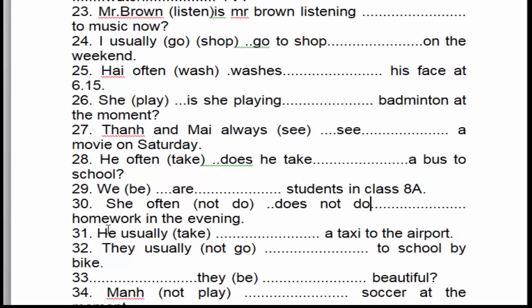Câu số 31: 'He usually takes a taxi to the airport.' Anh ấy thường đón taxi đến phi trường. 'Usually' là dấu hiệu nhận biết của thì hiện tại đơn. 'He' là chủ ngữ số ít, cho nên chúng ta phải chia theo chủ ngữ số ít — 'take' thêm 's' → 'takes'.